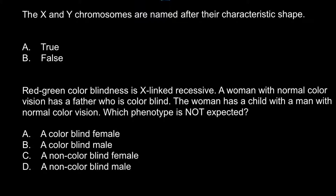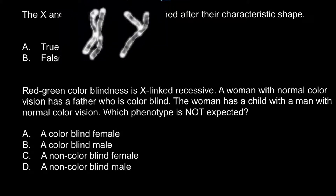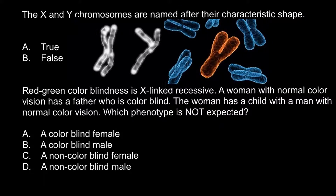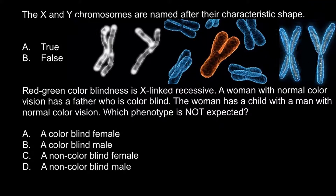The first question is: the X and Y chromosomes are named after their characteristic shape. I did a search and 50% of the pictures that I got looked like this. Here is one example picture, here is the second example, and here is the third example. By looking at these pictures you would definitely say that X and Y chromosomes were named after their characteristic shape.